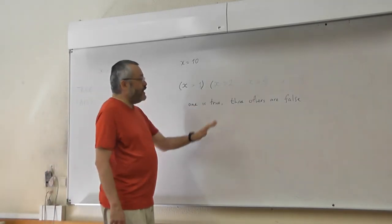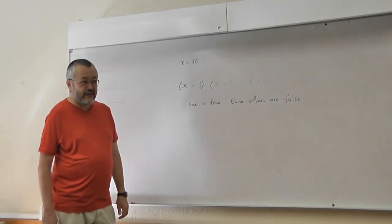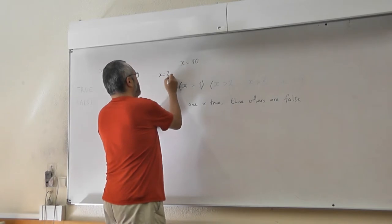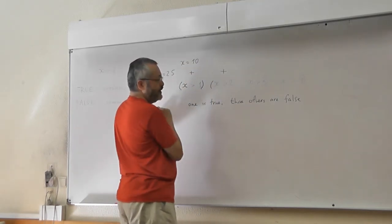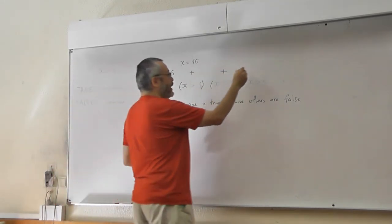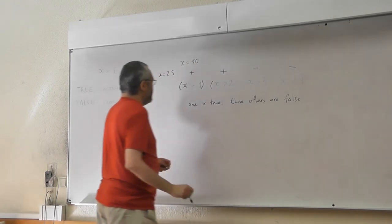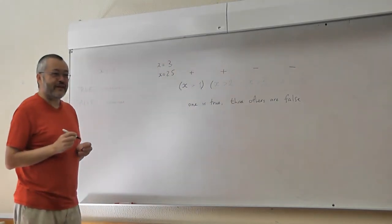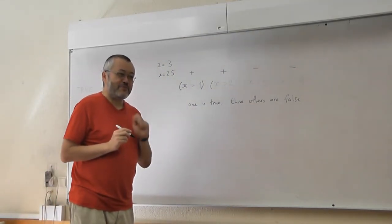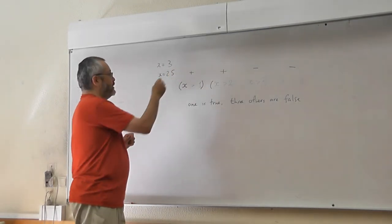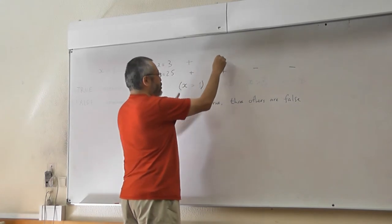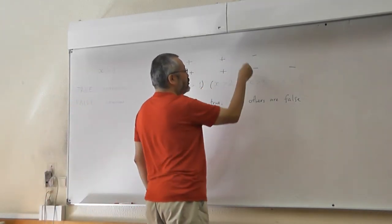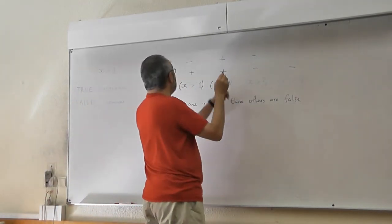Например, если x 2.5, то какие верны? (For example, if x is 2.5, which are true?) x больше единицы, больше двух верно? (x greater than one, greater than two are true?) If x equals 2.5, then these two are true because it's greater than one and greater than two, but these are not true. If x equals 3, then which statements are true? The first two are true: 3 is greater than one and 3 is greater than two, but the third is false because 3 is not greater than 3.